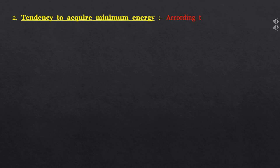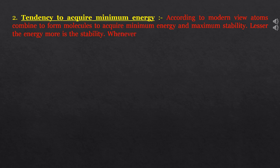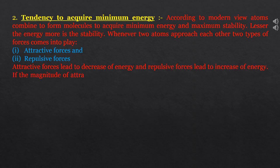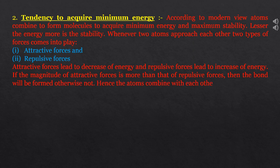The second reason is tendency to acquire minimum energy. According to the modern view, atoms combine to form molecules to acquire minimum energy and maximum stability — lesser the energy, more is the stability. Whenever two atoms approach each other, two types of forces come into play: attractive forces and repulsive forces. Attractive forces lead to decrease of energy and repulsive forces lead to increase of energy. If the magnitude of attractive forces is more than that of repulsive forces, then the bond will be formed, otherwise not.